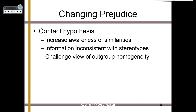That's how you change prejudice — through something called the contact hypothesis. This involves increasing awareness of similarities, moving people from the out-group to more of an in-group perspective. When you find out your information is inconsistent with stereotypes — meeting people from a group who don't behave the way you expected — it challenges your view of out-group homogeneity, meaning the belief that everyone in this group is the same.